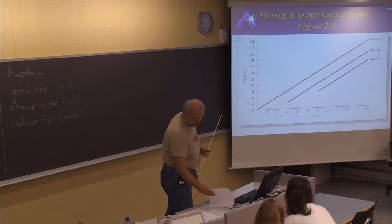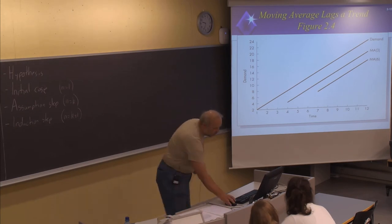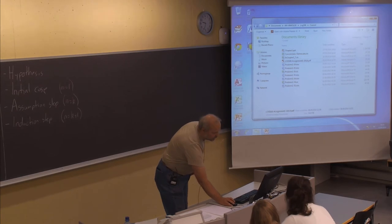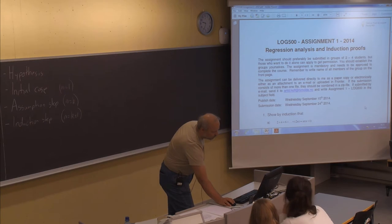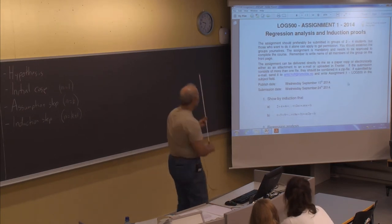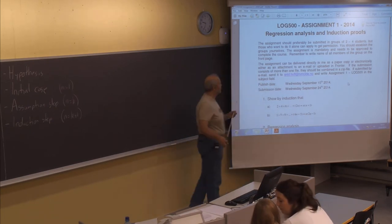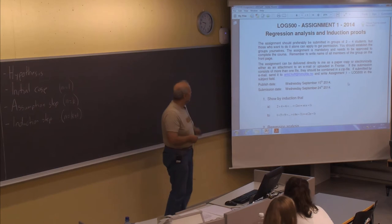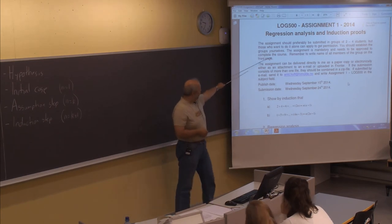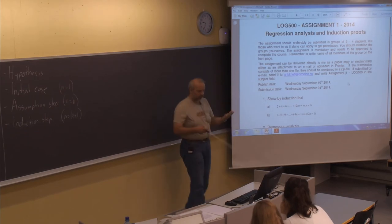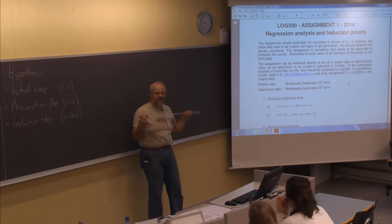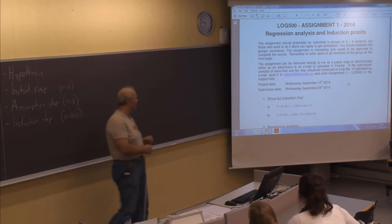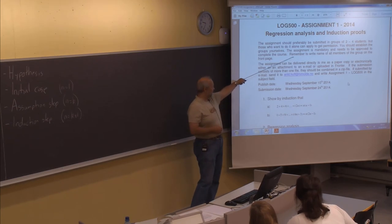Before I continue, I will show Assignment Number One. It is uploaded in Fronter, so you can find it there. Preferably you should work in groups of two to four students, but you can also apply for permission to work alone if that is more practical. Remember to write the names of all members of the group on the front page — it's quite difficult for me to guess who is working together.